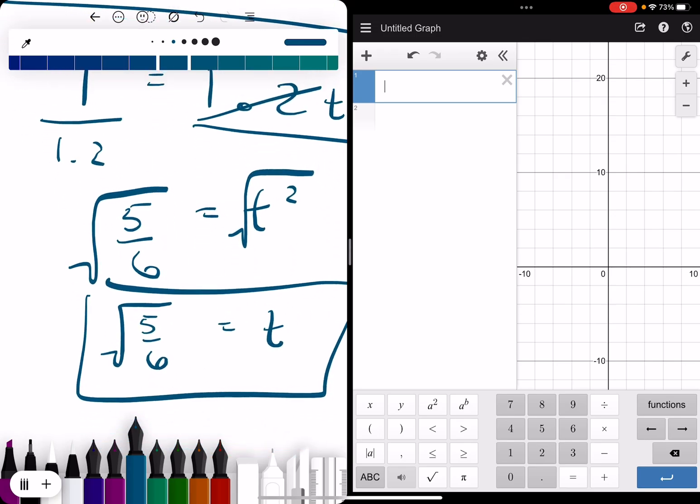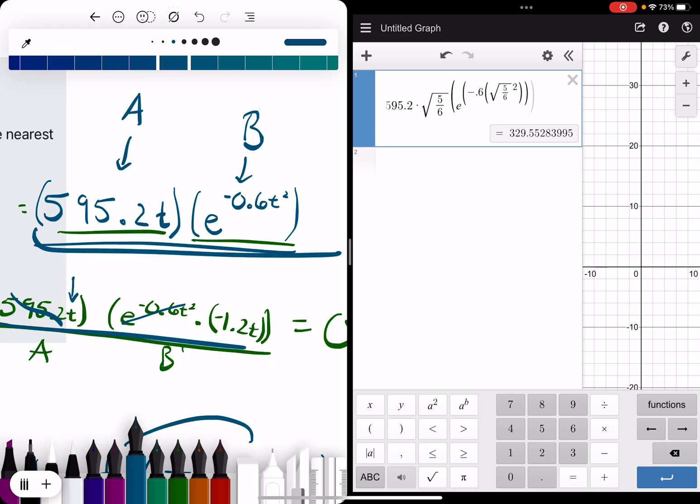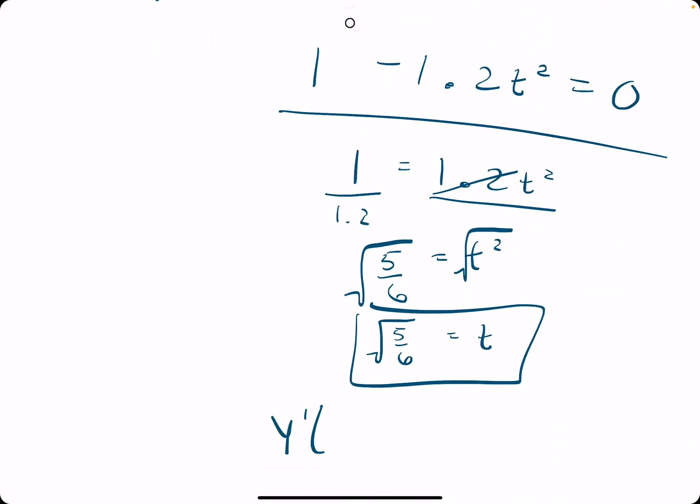So, plugging in square root of 5 sixths into t. Let's see what we have here. So, 595.2 times the square root of 5 sixths. And then, all of this times e raised to the negative 0.6 times t squared. So, we'll have square root of 5 over 6. And then, that is being squared. So, really, it's just ultimately times 5 sixths. All right. I hope I have my parentheses correct here. It just keeps adding a bunch more. Anyway, 329.5 is basically what we're looking for. 329 or 330, maybe if we round. So, y prime with this t value plugged in is about 330.